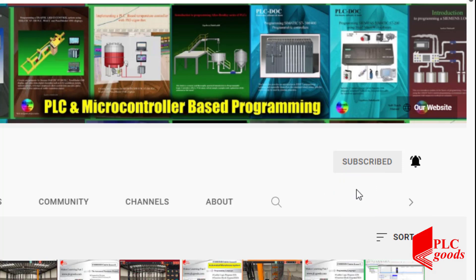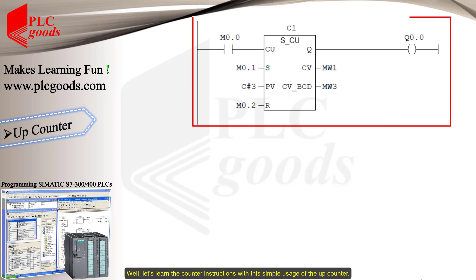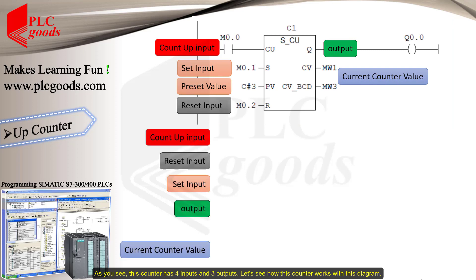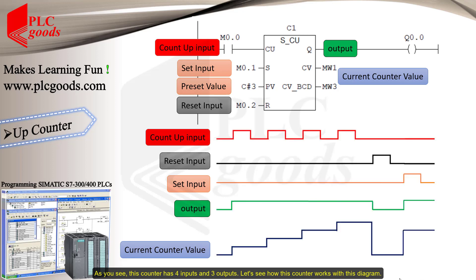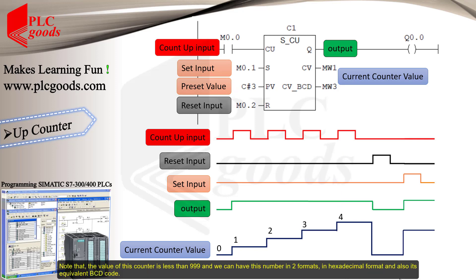Let's learn the counter instructions with this simple usage of the up counter. As you see, this counter has four inputs and three outputs. The current counter value is incremented by one if the signal state at input CU changes from zero to one. Note that the value of this counter must be less than 999.